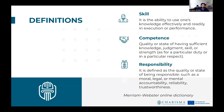Let's look at some relevant definitions. First of all, skill: skill is simply the ability to use our knowledge effectively in relation to the execution or performance of an action.